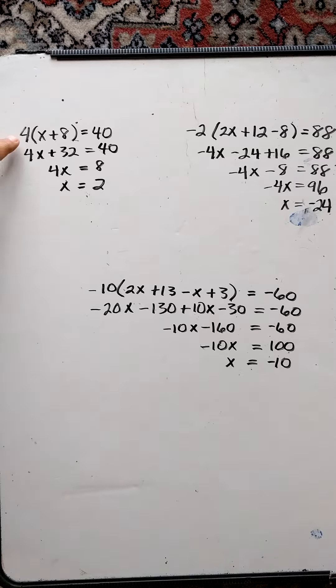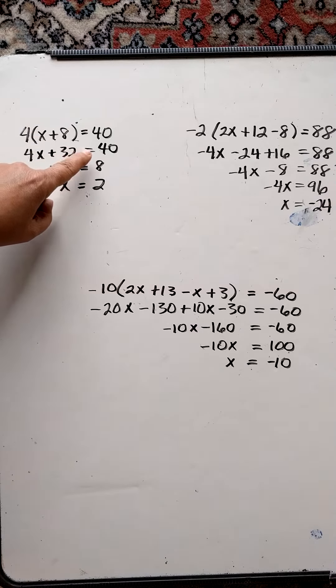I'm going to multiply, distribute 4 to each one of the terms inside the parentheses, and then solve for the equation. 4 times x is 4x. Bring down the plus. 4 times 8 is 32, and that equals 40.